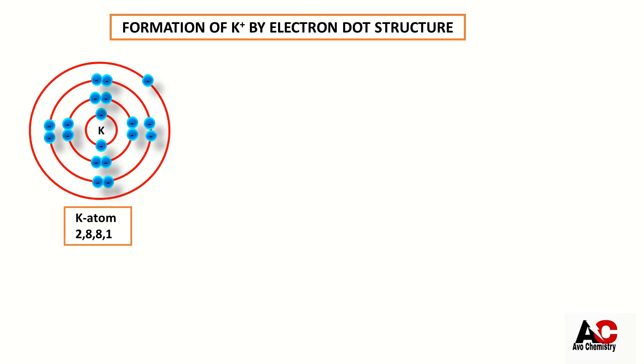You can see net charge is 0. Number of protons equals plus 19, so overall charge is plus 19. Total number of electrons are minus 19, so total charge on electrons is minus 19. The net charge is 0 because these opposite charges cancel their effect.